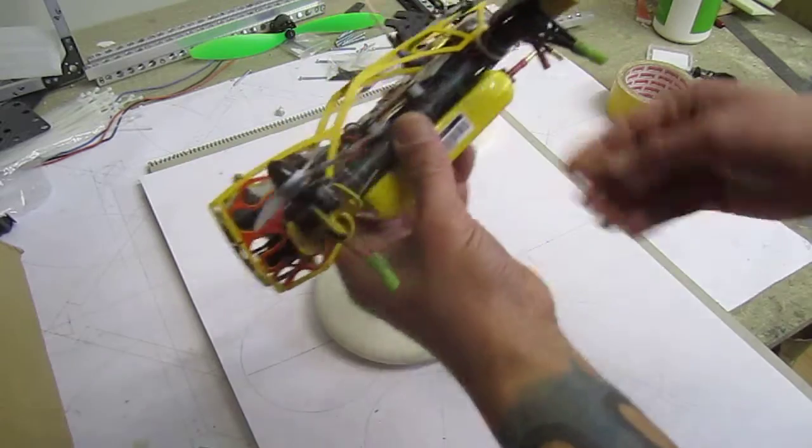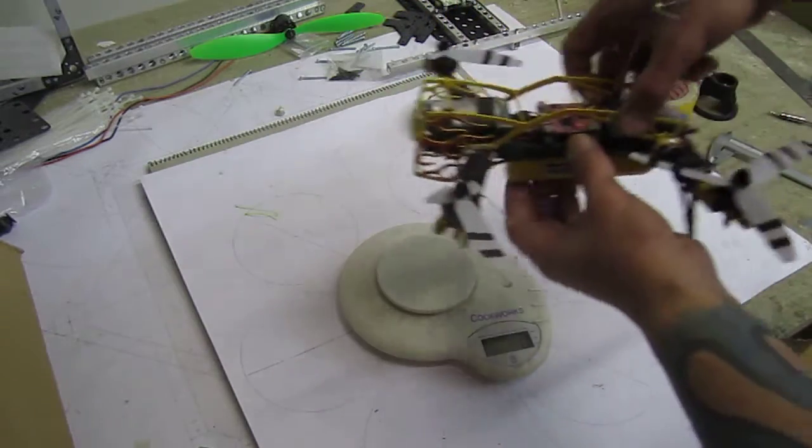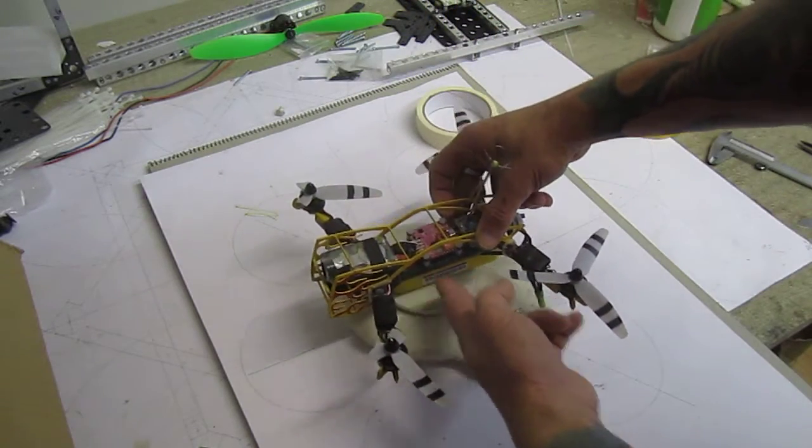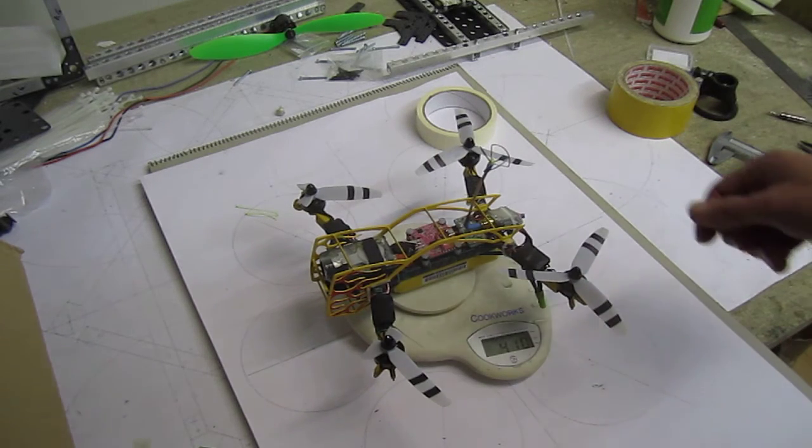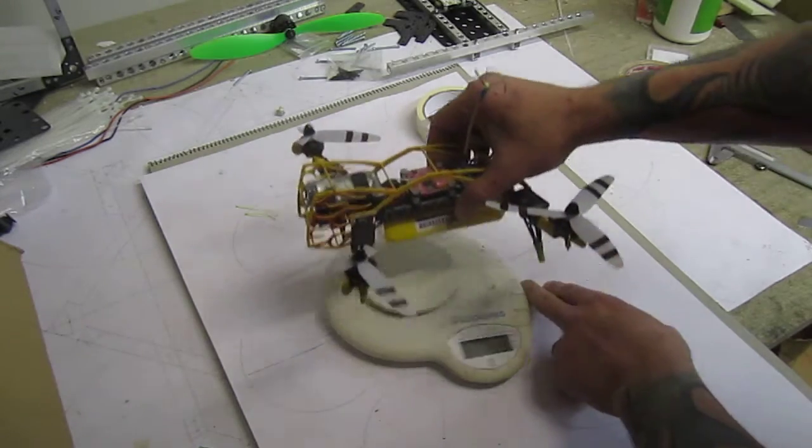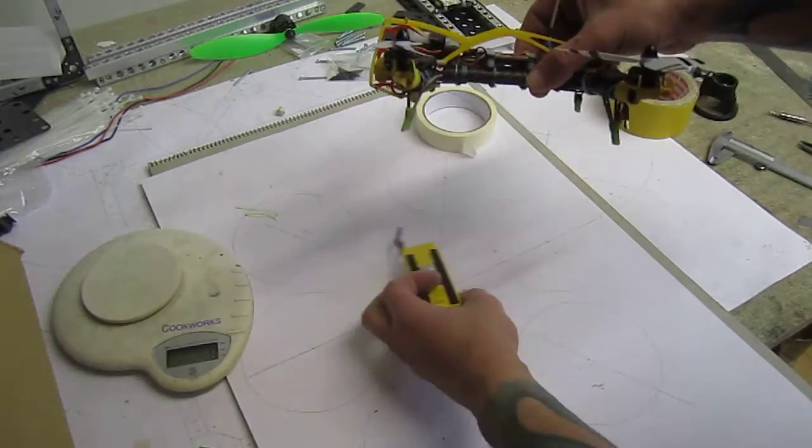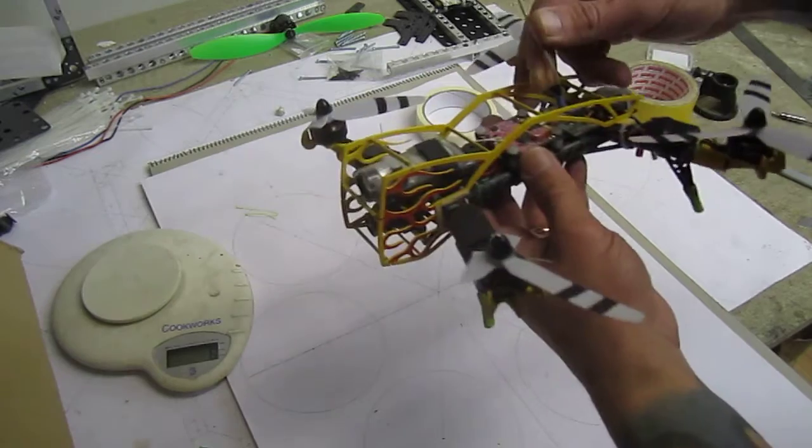So with all this thing ready to go, I have 410 grams all-up flying weight. Now needless to say, she's bloody nippy. That was my fastest copter that I ever built.